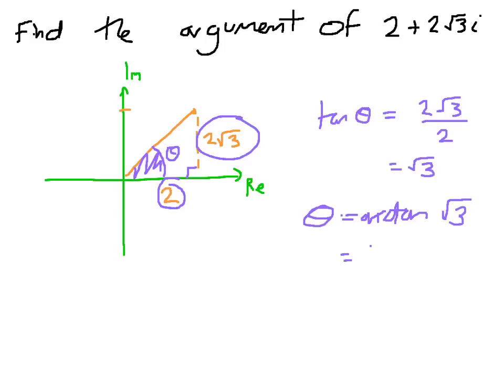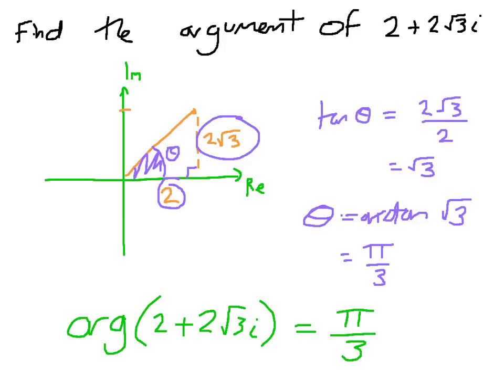And that, of course, equals pi upon 3. So what is the argument of this number? Let's write our answer very explicitly. The argument of 2 plus 2 root 3i equals pi upon 3.